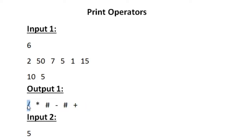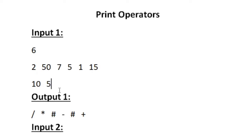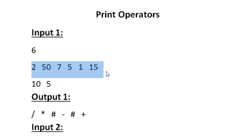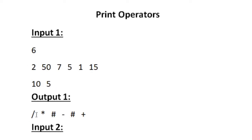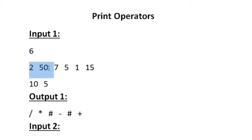After accepting the values of p and q, we traverse through the n integers. In every iteration we check whether any arithmetic operation applied between p and q gives the current value, and if so we print the respective operator. The first value out of n integers is 2, and p=10, q=5. Since 10 divided by 5 is 2, we print the division operator.